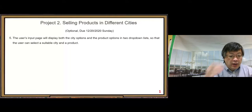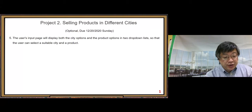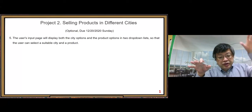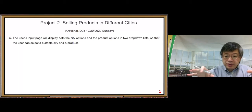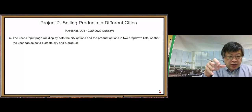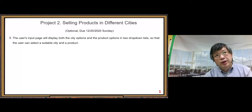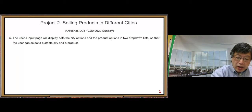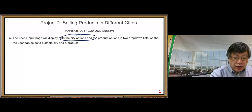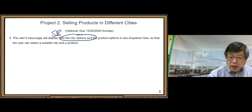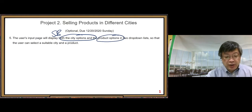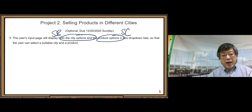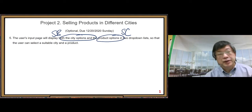Requirement number five: the user's input page will display both the city options and the product options in two drop-down lists, so that a user can select a suitable city and a product. We need to modify the interface. We have the city option drop-down list in sample B and the product option drop-down list in sample C, and now we put them together.